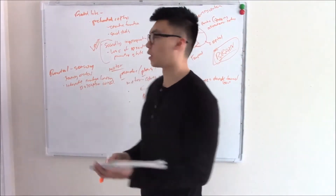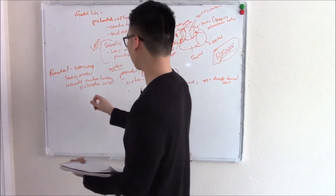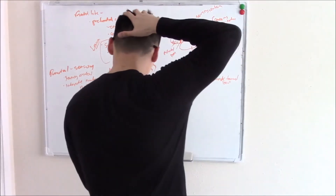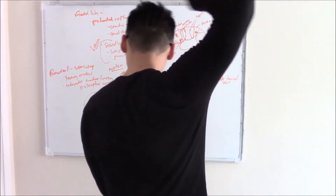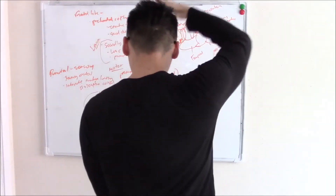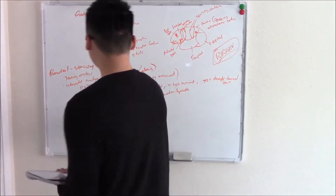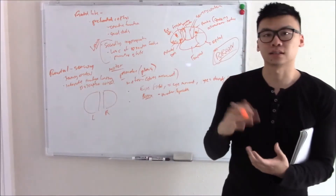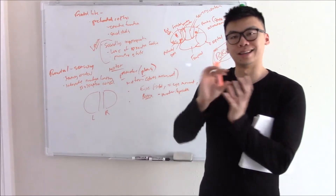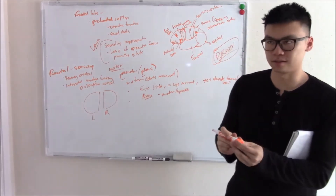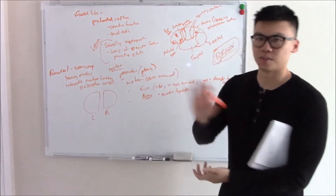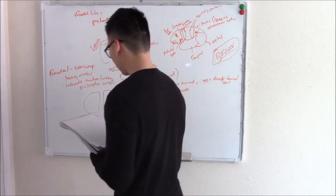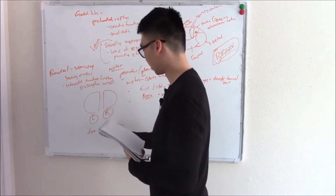To understand parietal lobe lesions, we first need to understand that your brain is split into two hemispheres. Brain function can depend on which hemisphere we're talking about, and this is especially pronounced in the parietal lobe. You have a dominant and a non-dominant hemisphere. The dominant hemisphere is usually your left, regardless of handedness. By default, your right is your non-dominant.